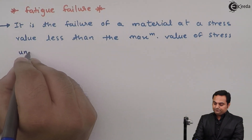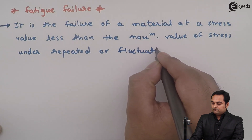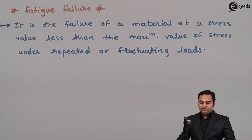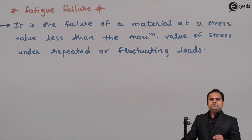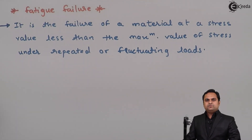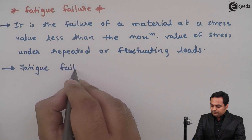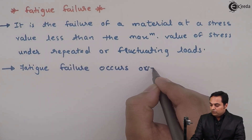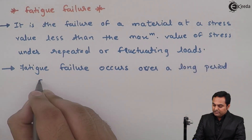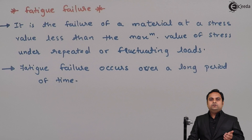Fatigue failure occurs under repeated or fluctuating loads. When a material is subjected to stress for a long period of time and that stress is repeated or fluctuating, the material will fail at a value less than the maximum stress. Fatigue failure occurs over a long period of time and requires a number of cycles — it is not a sudden or instant type of failure.